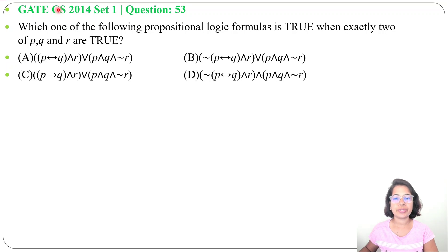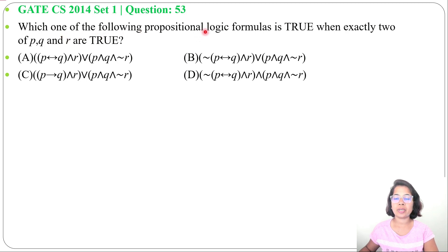Let's solve one previous question of mathematical logic. This question was asked in GATE CS 2014, Set 1, question number 53: which one of the following propositional logic formulas is true when exactly two of P, Q and R are true? Four options are given.